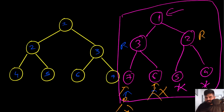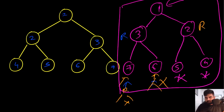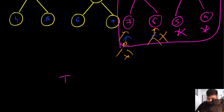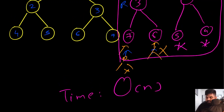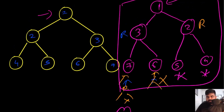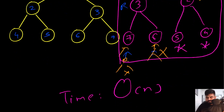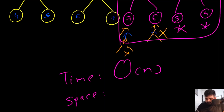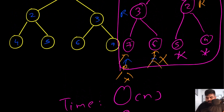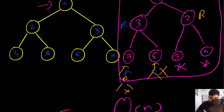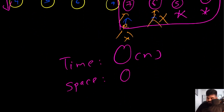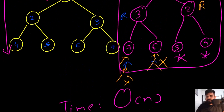That is the optimal approach. There is also an iterative way to solve this problem, but for tree problems I believe the recursive approach is better. Let me know in the comments if you want to see the iterative approach and I can make a separate video. For time complexity, it is O(n) where n is the number of nodes, since we iterate over every single node. For space complexity, because of the recursive call stack, it is O(h) where h is the height of the binary tree.